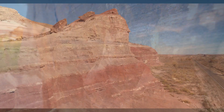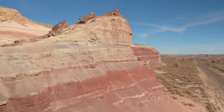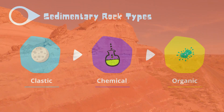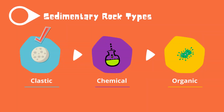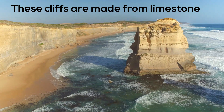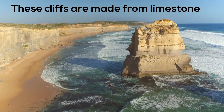Sedimentary rocks can be divided into several groups. Some common groups include clastic sedimentary rocks, which form from fragments of pre-existing rocks; chemical sedimentary rocks, which form by precipitation of minerals from water — precipitation is when dissolved minerals come out of water; and organic sedimentary rocks, such as coal and limestone, which form from the accumulation of plant and animal debris.